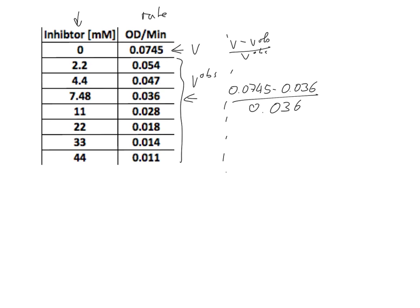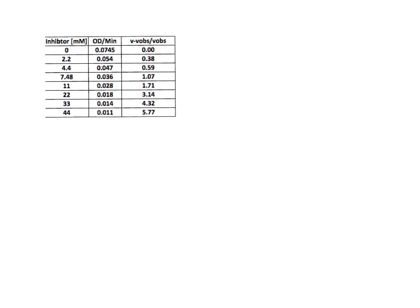You do that for all the data. Once you've done that, you should get a dataset where you have your inhibitor concentration and what you plot on the y-axis, then you plot the inhibitor concentration column on the x-axis and this on the y-axis.